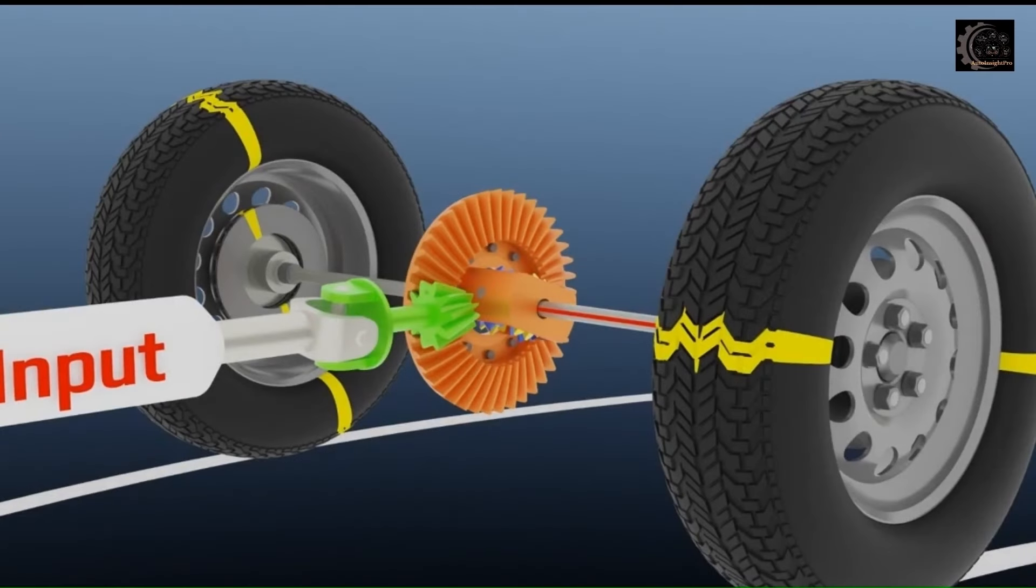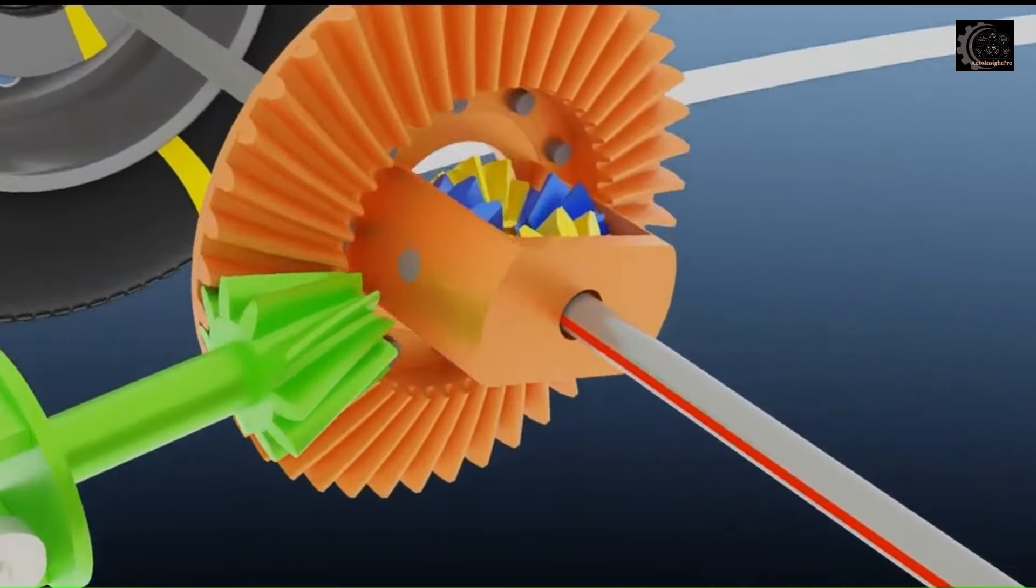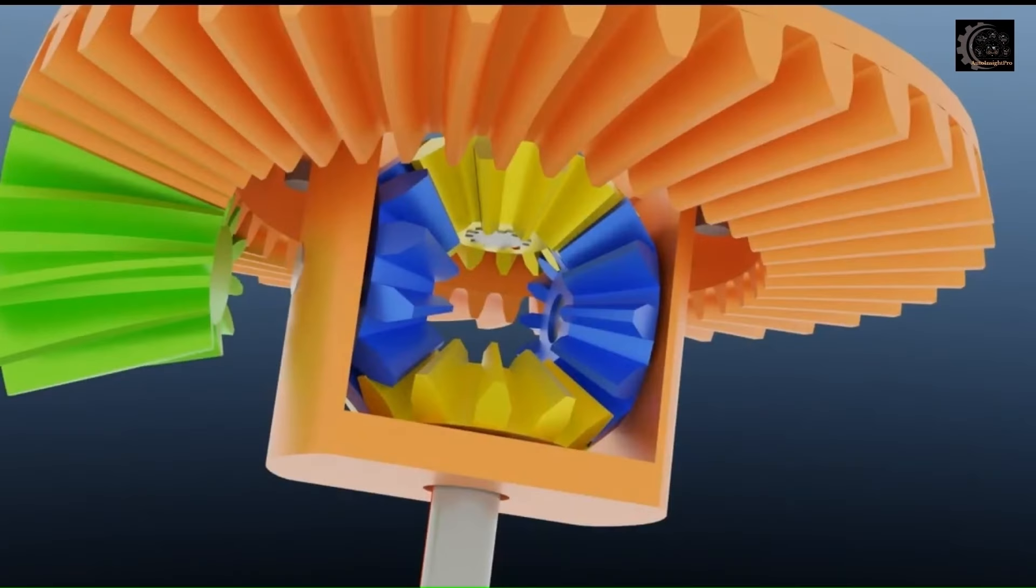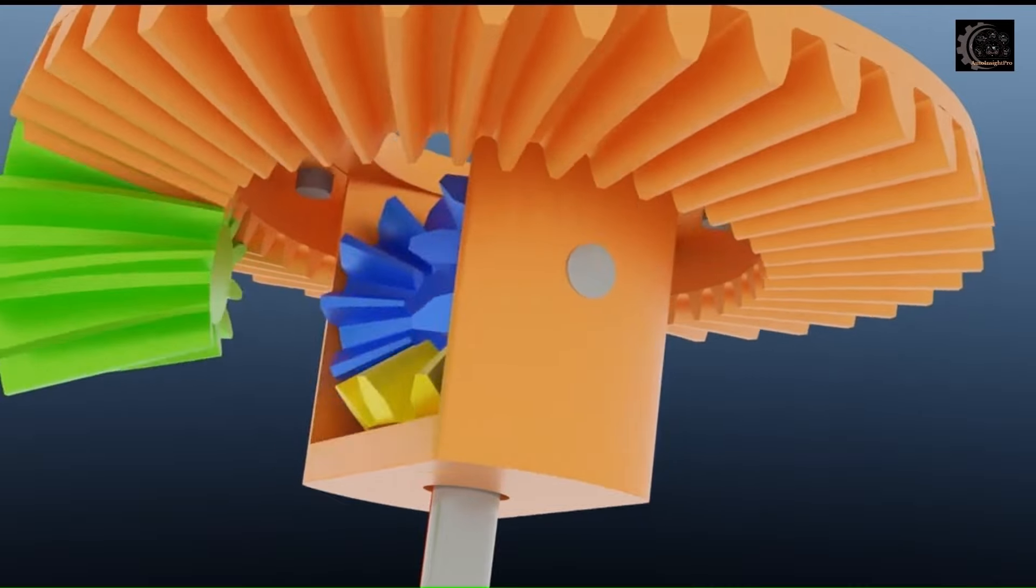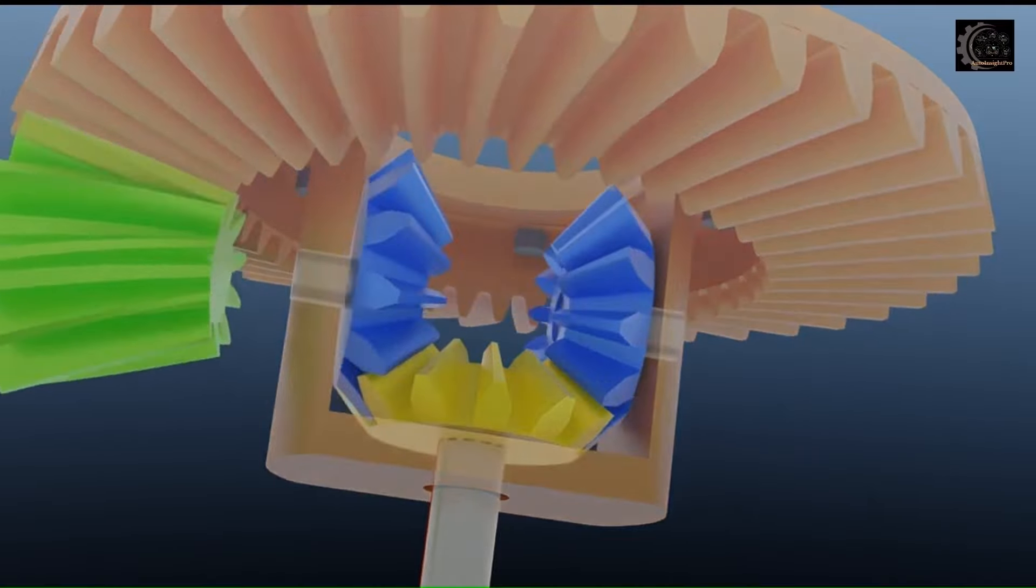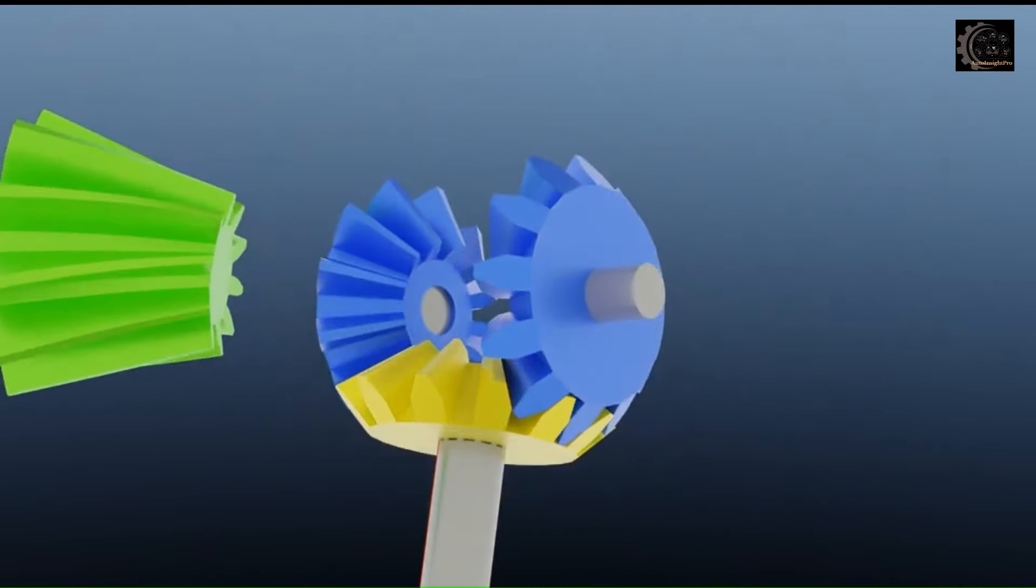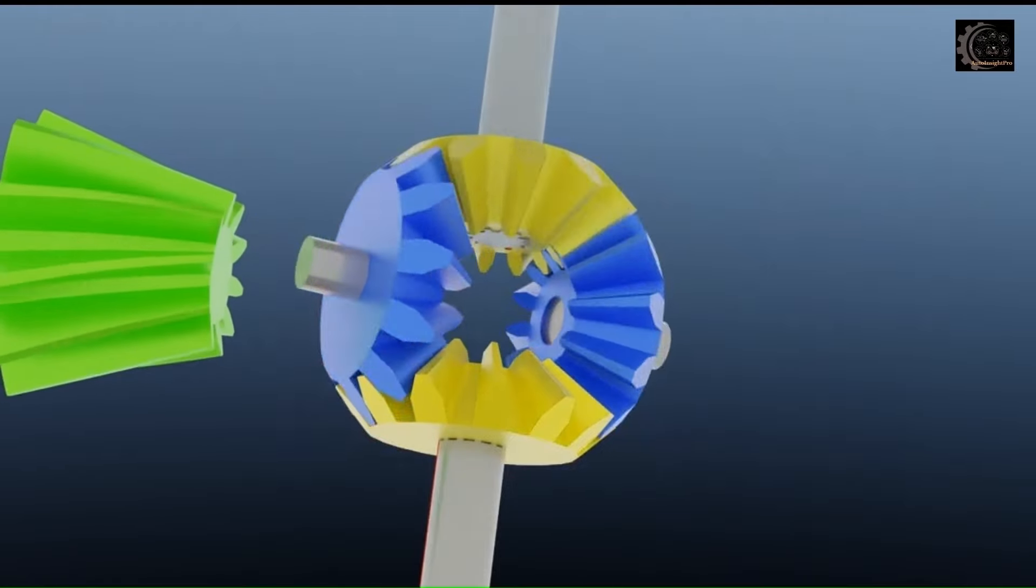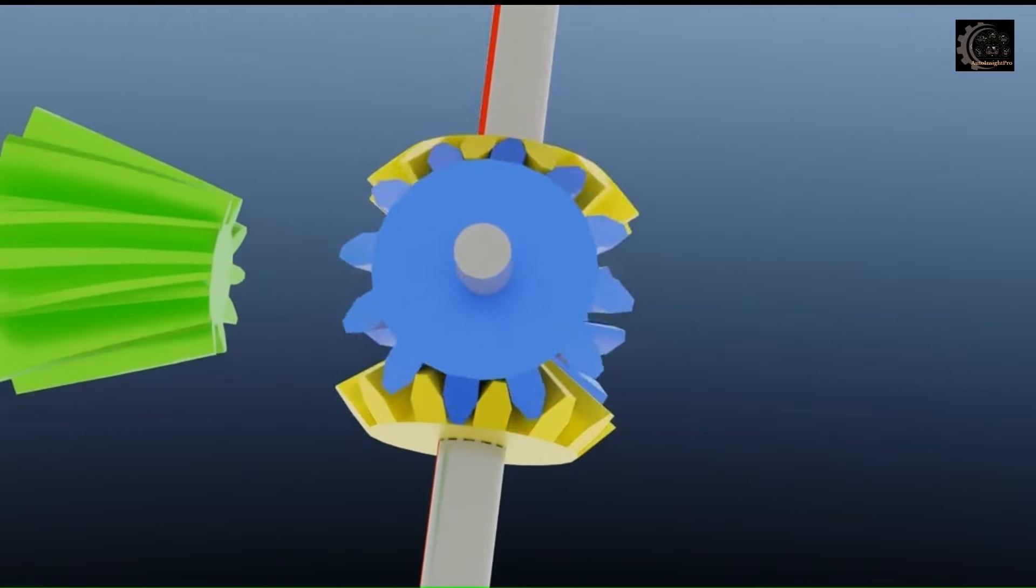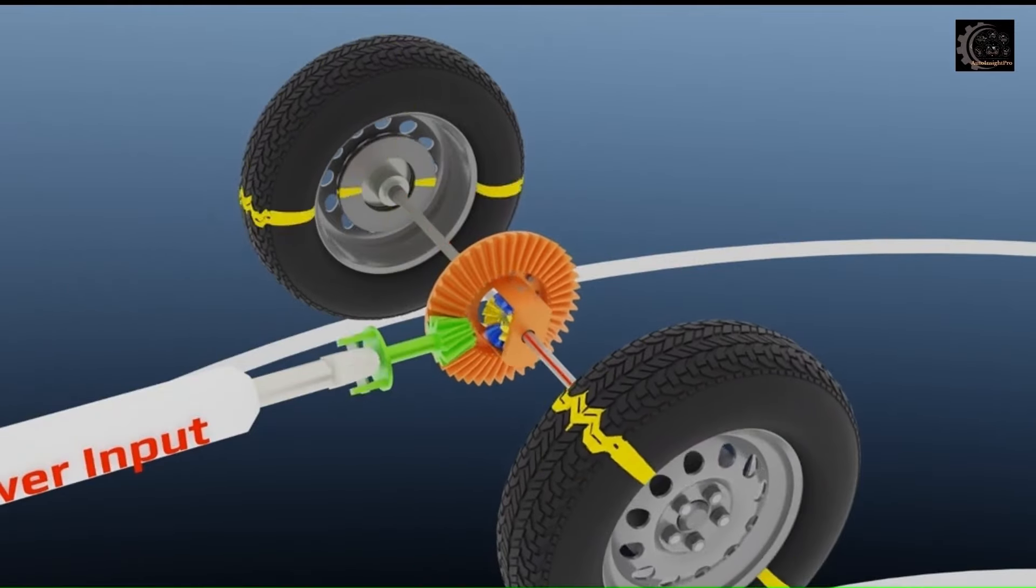While following the curved path, inner side wheel develops more friction between road and tire. So inner side wheel, as well as the side sun gear, tries to slow down. But in order to maintain crown gear rotational speed, spider gears start rotating on its axis. Spider gears rotation provides additional rotation to the opposite side sun gear. So this is how outer side axle rotates faster than inner side axle. This helps non-steerable rear wheels to follow cornering lines smoothly.